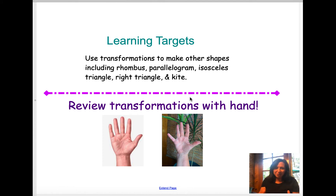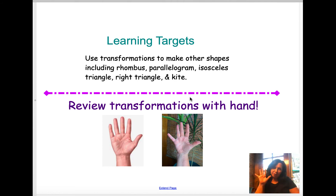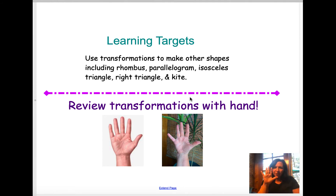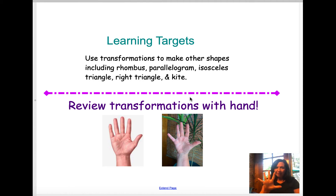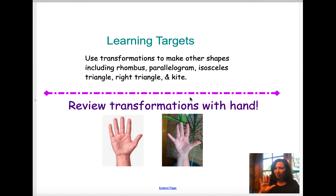I'm just reviewing transformations with your hand — I know you can probably figure out which one is mine. If I was asking you to do a rotation, I would expect you to do something like this. If I asked you to do a reflection, that might look like this. If I asked you to do a dilation, it might go like this. If I asked you to do a translation — moving it from one place to another — that might be two different steps. Remember, a transformation can include several steps together.